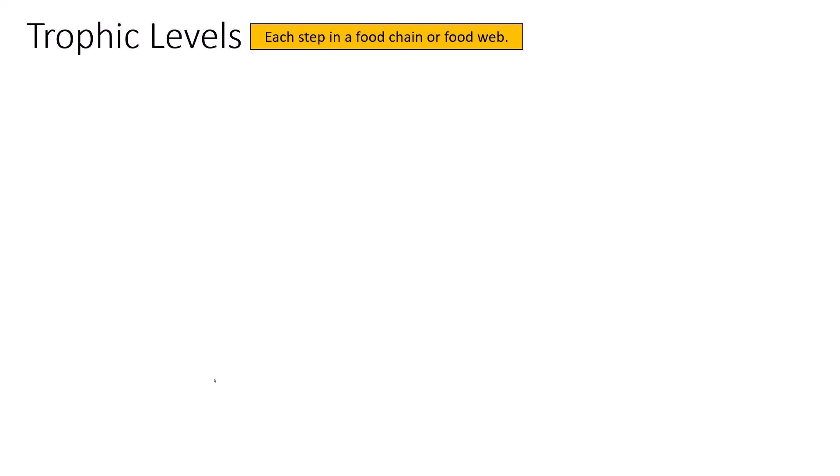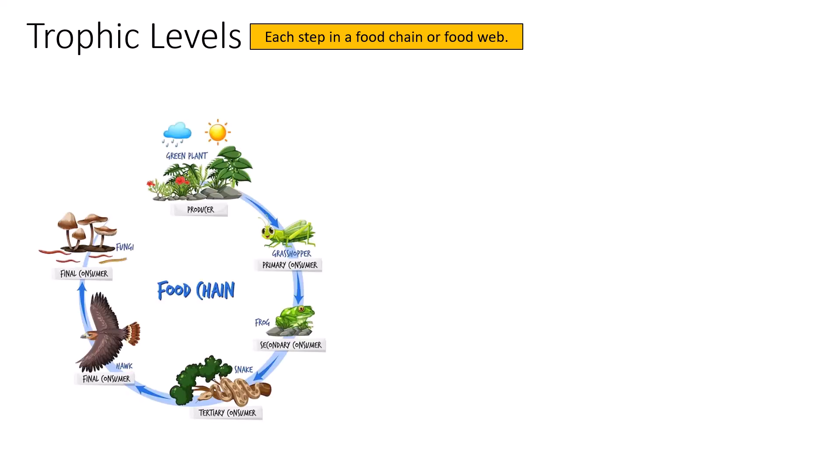Trophic levels — as stated in the last video, each step in a food chain or food web is a trophic level. We use terms like primary producer, primary consumer, secondary consumer, tertiary consumer, and quaternary consumer. We've also used terms like detritivore, decomposer, carnivore, and herbivore — all very important terms to keep in mind as we talk through ecological pyramids.